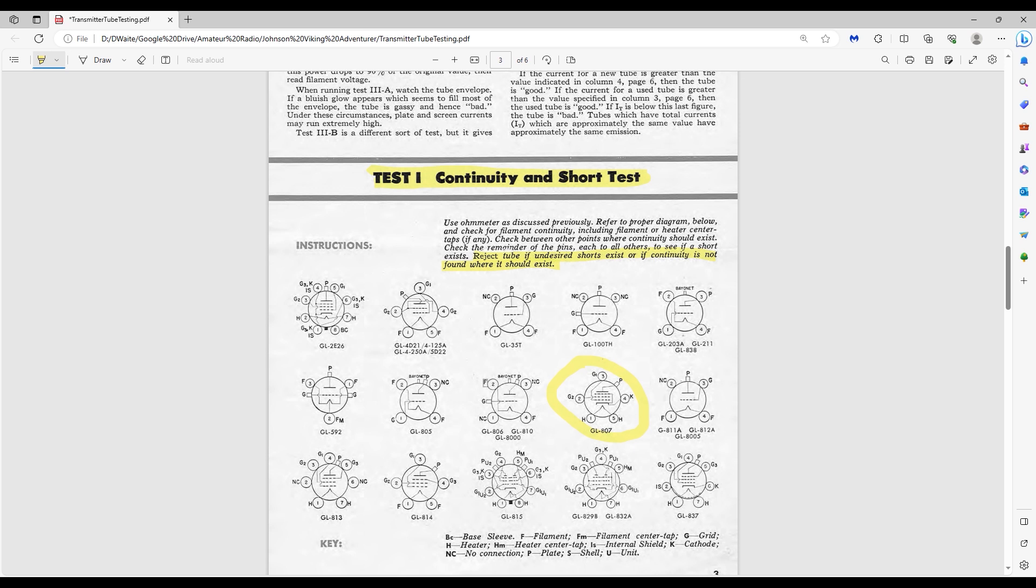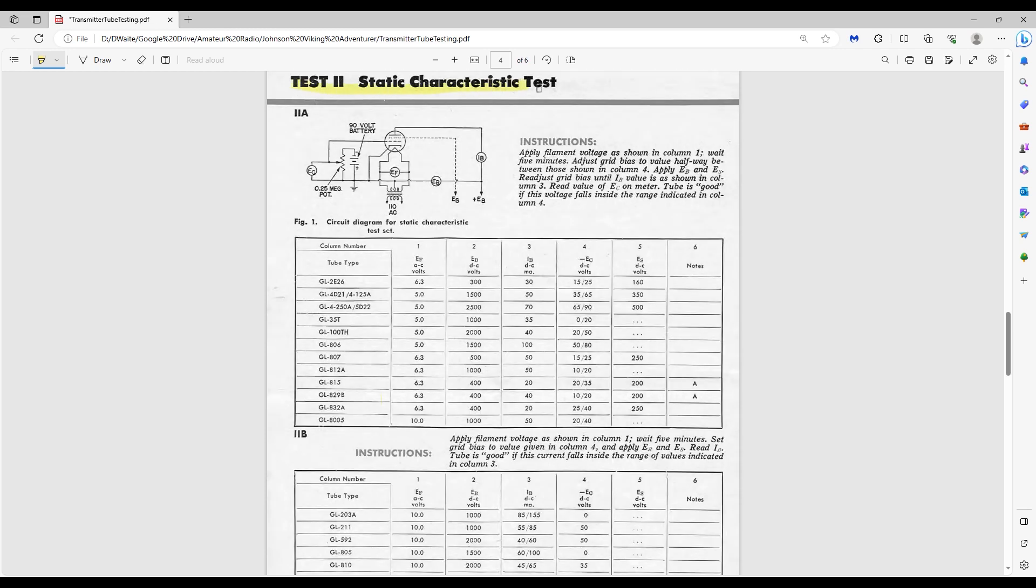The second test is called the static characteristic test, and it quantifies how much control grid voltage is needed to obtain a specific magnitude of plate current. For the 807, it specifies applying 500 volts to the plate, 250 volts to the screen grid, and then setting the control grid voltage to obtain 50 milliamps of plate current. Per the table, that should require between minus 15 and minus 25 volts. Anything outside those limits implies a suspect tube.